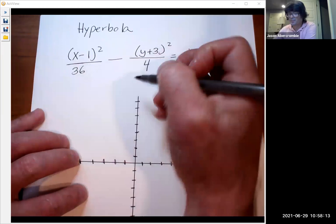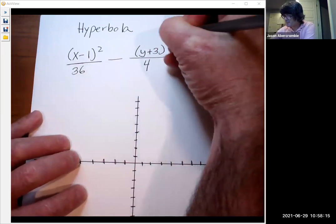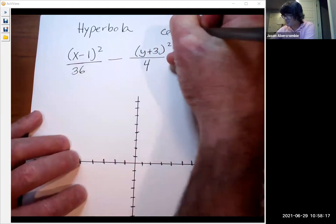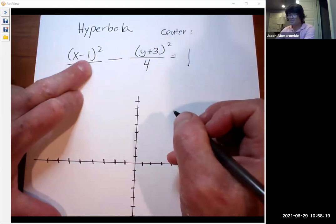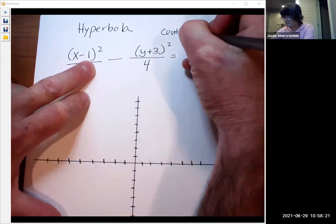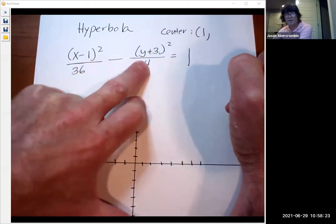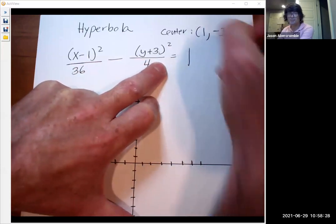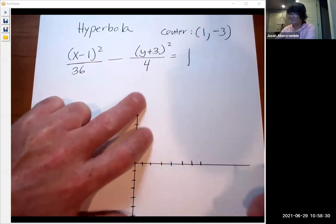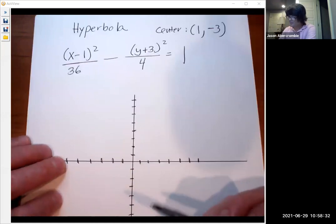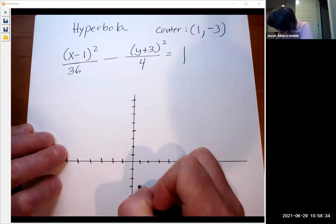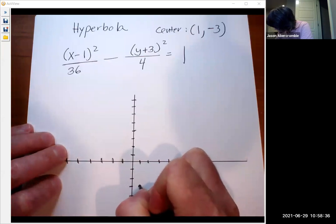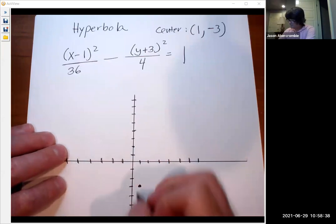The first thing is we need to know the center. That's the same for every conic section. The center is x minus the x value. So that's going to be one and then y minus. This is like y minus a negative three. So the center, it's a plus three, plus is like minus a negative. So the center is going to be one negative three. Let's start that out right here. There's my center.